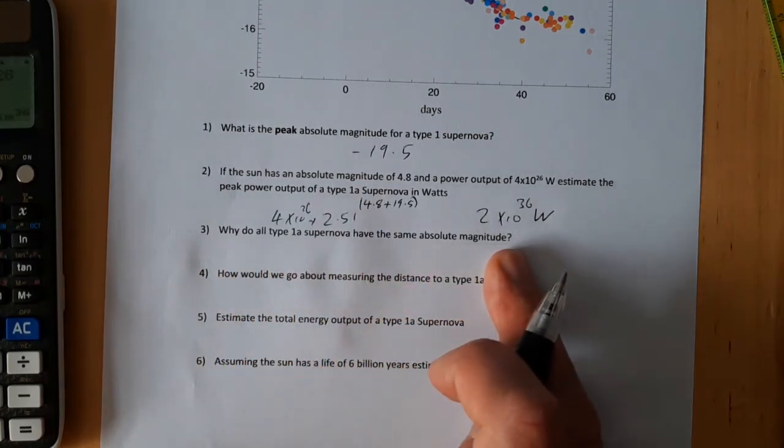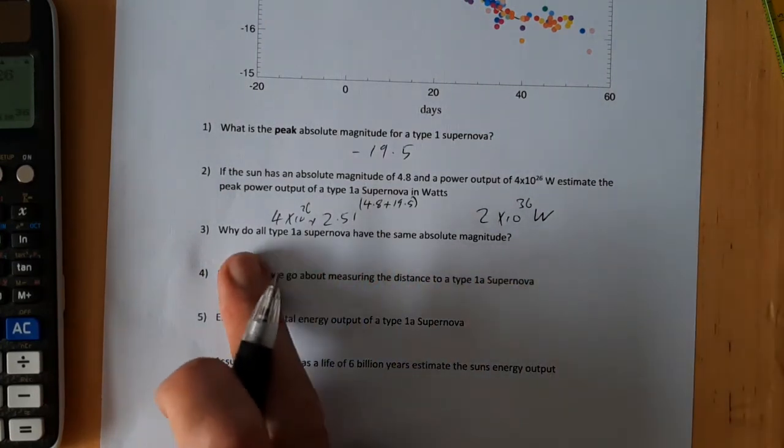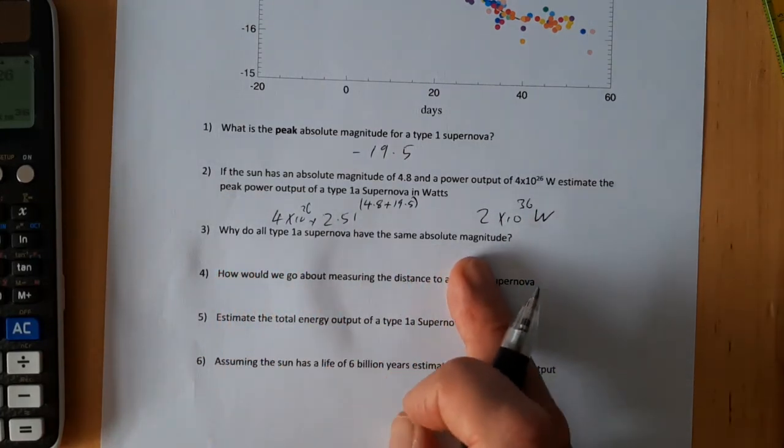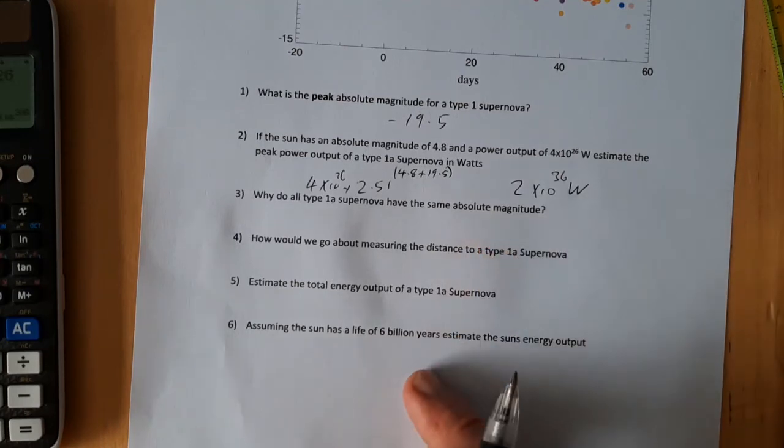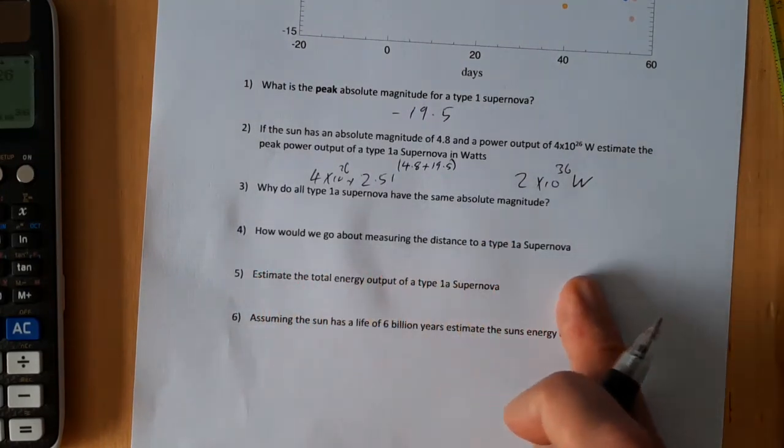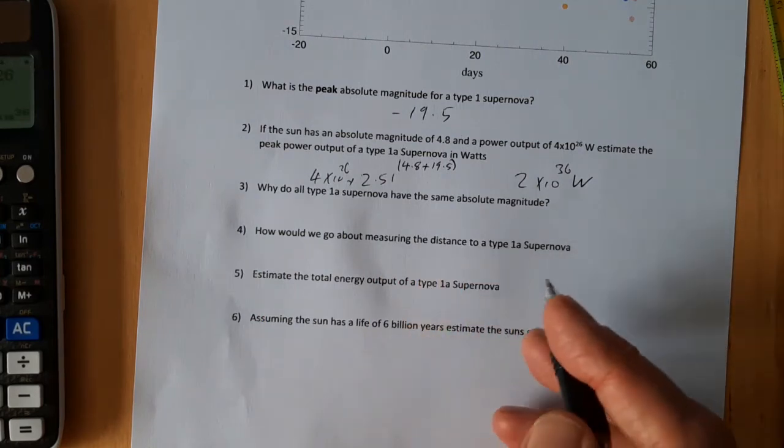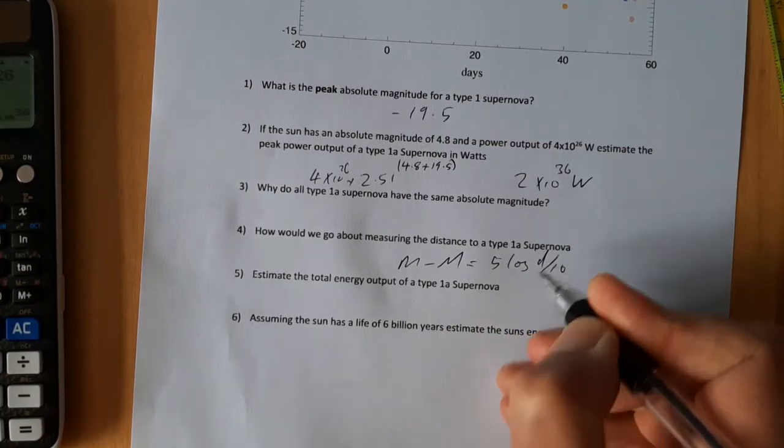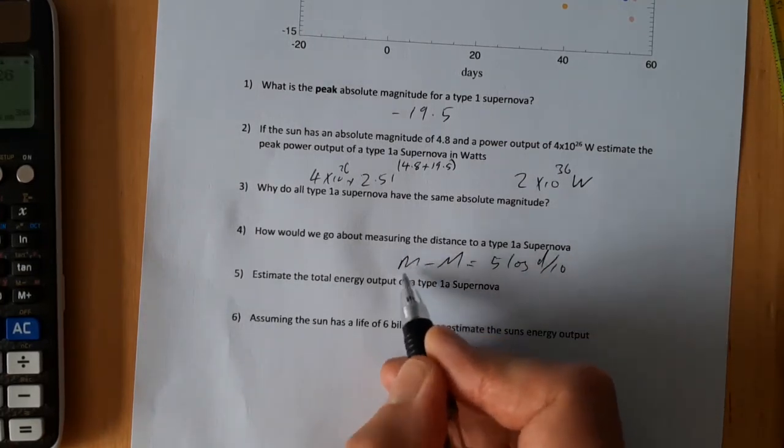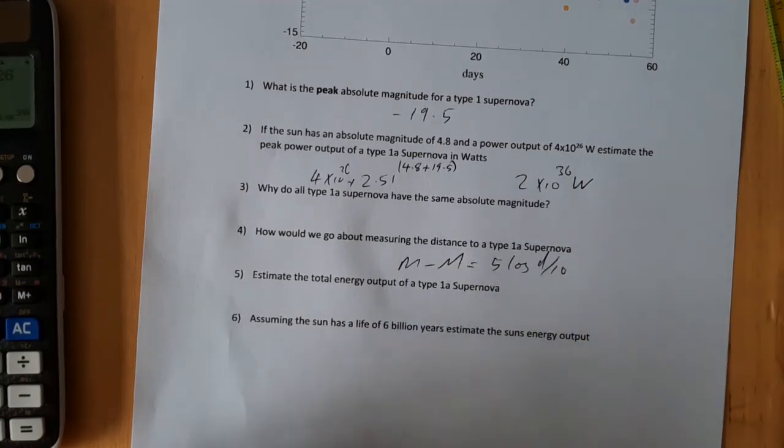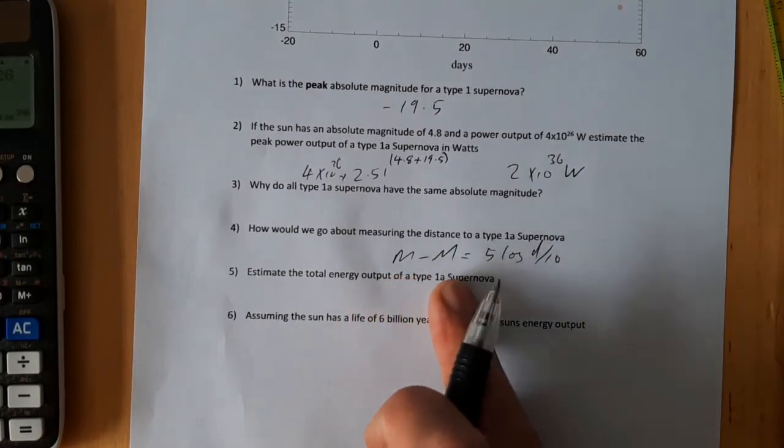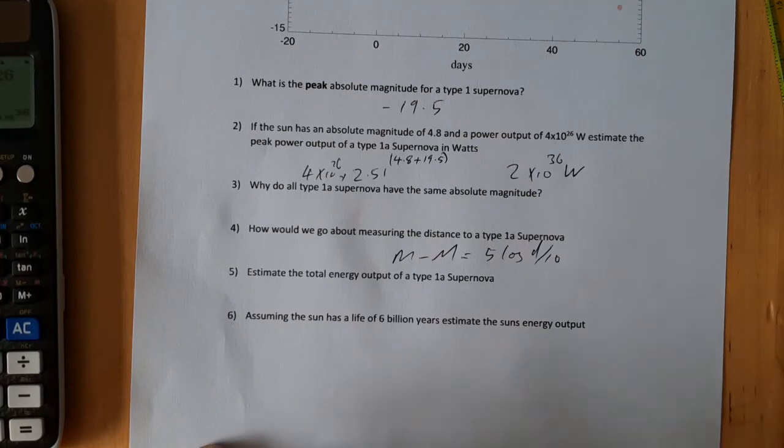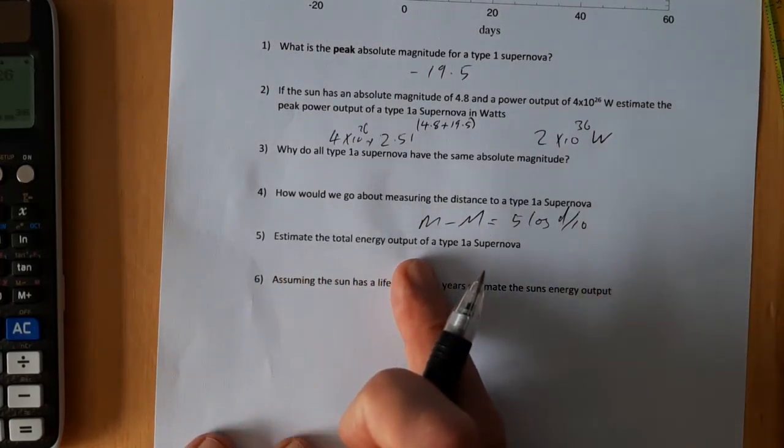Why do all type 1a supernovas have the same absolute magnitude? Because the event is triggered by reaching the same mass in every instance. We've got a slow increase in mass until we reach the 1.4 solar masses then we get the explosion. How do we go about measuring the distance to a type 1a supernova? We would use this equation. We would measure the peak, the brightest it appears to be in our night sky on our magnitude scale, we would then compare that to our reference brightness which I've estimated is minus 19.5.